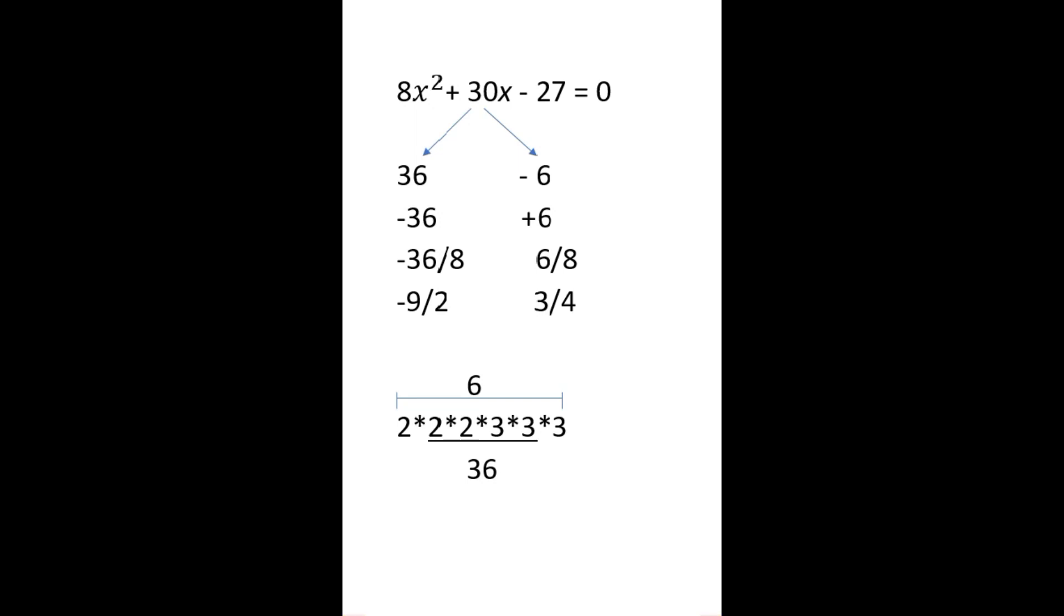How to solve a middle term factor. Suppose 8x² + 30x - 27 = 0. So how to proceed? Let's factor 8 and that 27. First, 8 means 2 into 2 into 2, and